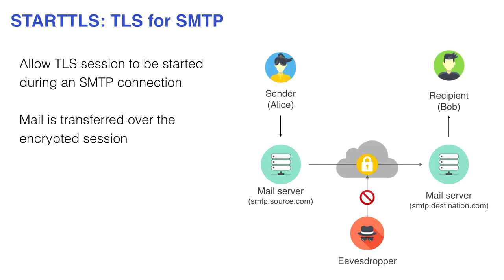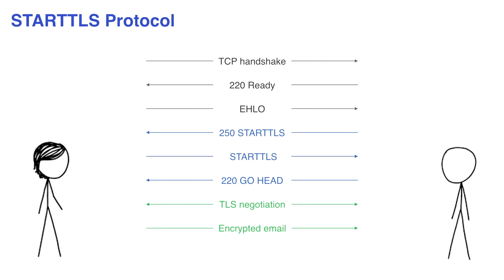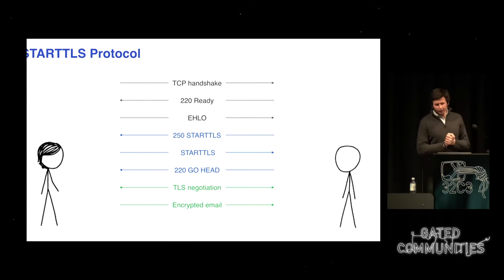The first protocol that comes to mind is probably the most well known: STARTTLS — essentially TLS for SMTP, which allows messages to be encrypted in transit. The protocol is pretty simple: you start a normal SMTP session, create a TCP handshake on port 25, send a EHLO, and the server responds with features it supports — one of which is STARTTLS. You then send the STARTTLS command, the server confirms it supports it, you do a normal TLS handshake with client hello and server hello, and after negotiation finishes you're back in SMTP and can deliver your mail over this TLS session.